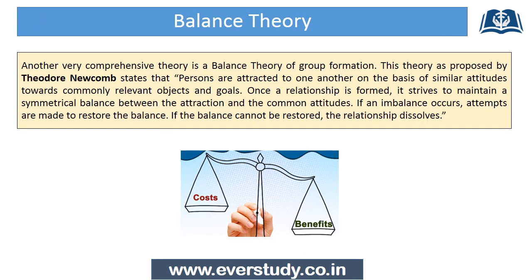The next theory is Balance Theory, proposed by Theodore Newcomb. This theory states that we are attracted to others on the basis of similar attitudes, and together they can achieve common and relevant objectives or goals. If there is an imbalance, we try to restore the balance. If balance cannot be restored, the relationship will dissolve.